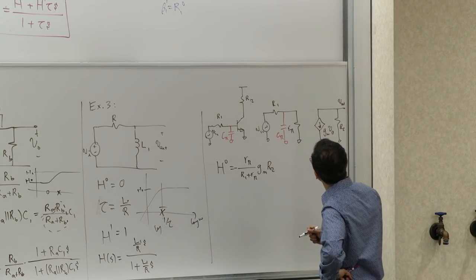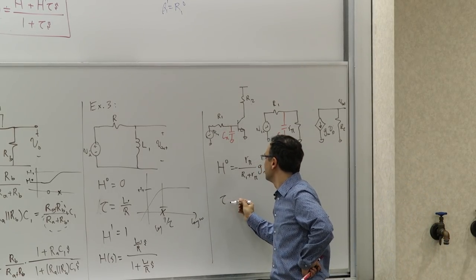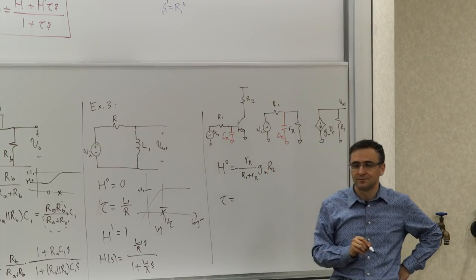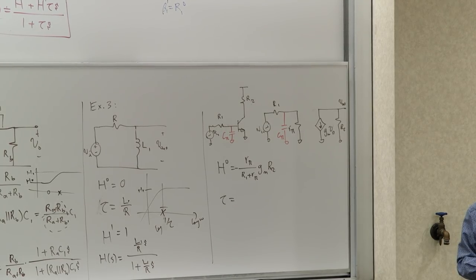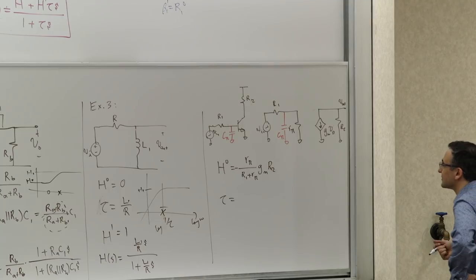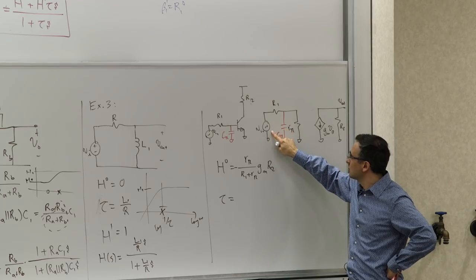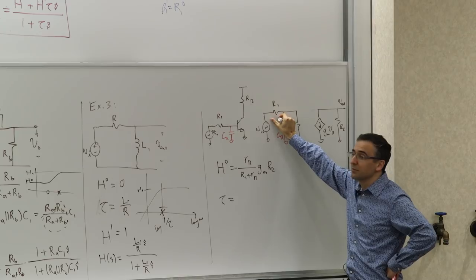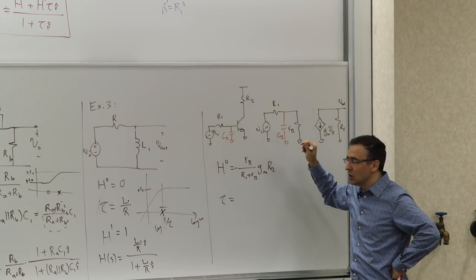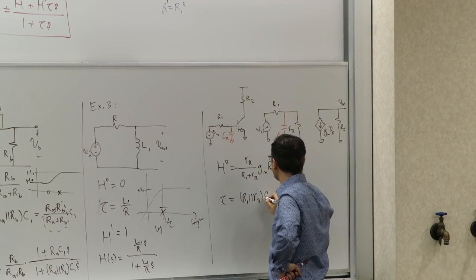What is the time constant tau? Null all independent sources — short-circuit V-in — and look at the resistance seen by C-pi. With V-in shorted, R1 and R-pi are in parallel to ground. So tau equals R1-parallel-R-pi times C-pi. We call this R-superscript-zero for the pi element — written as tau-pi, the time constant associated with C-pi.